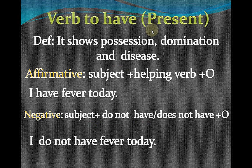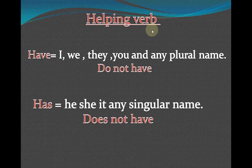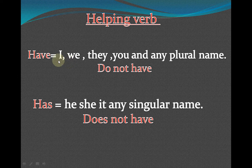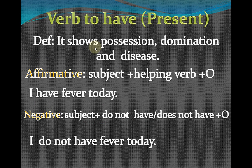Let me talk about the helping verbs. The definition and formula are the same — only the helping verb changes. In the past we use 'did'; in the present we use 'do not' and 'does not'; and in affirmative sentences we use 'has' and 'have.' 'Have' is used with these subjects in affirmative sentences: I, we, they, you, and any plural name like Ali and Farhan as a plural. 'Do not have' is used in negative, interrogative, and interrogative plus negative. For example: 'I do not have fever today.'